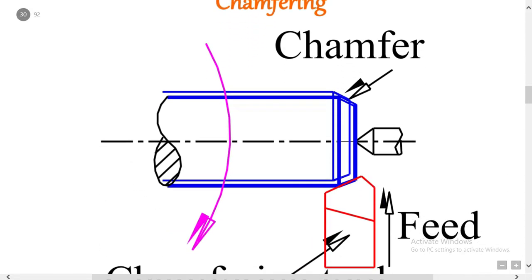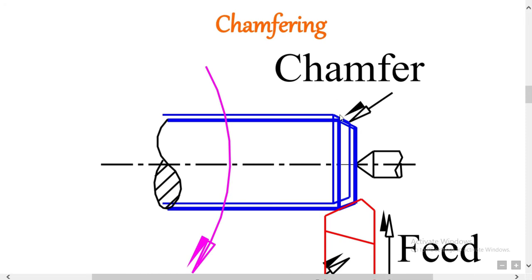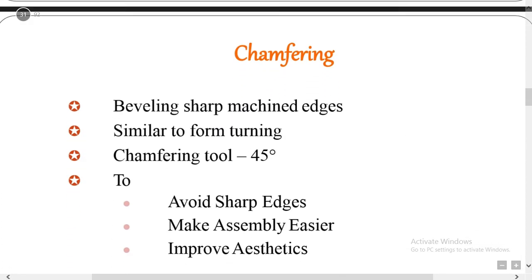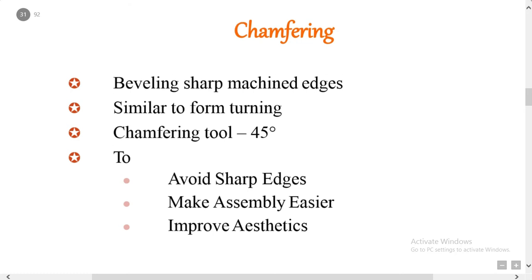Next operation — chamfering. Chamfering means beveling the extreme end of the workpiece. You observe in the figure — these edges are machined using a chamfering tool at a slant angle. The operation may be performed after knurling, turning, or thread cutting so that the nut may pass freely on the threaded workpiece. The chamfering tool is set at 45 degrees. This avoids sharp edges, makes assembly easier, and improves aesthetics.